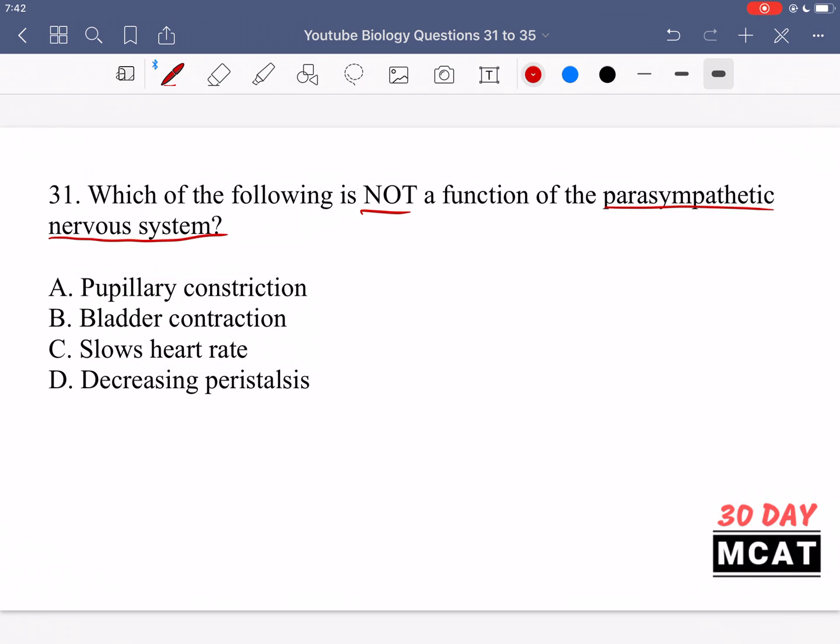For this you just need to know what the parasympathetic nervous system does. This is the rest and digest part of the autonomic nervous system, and it is responsible for constricting the pupils whereas the sympathetic nervous system, which is the fight-or-flight system, is responsible for dilating them.